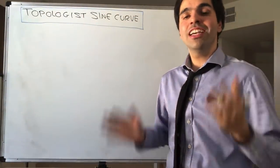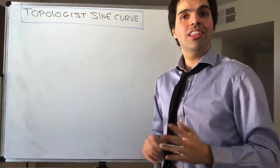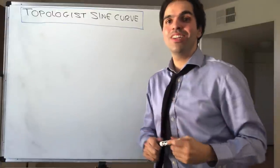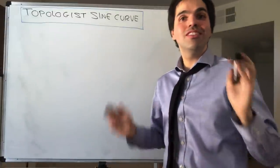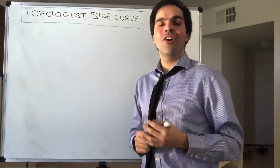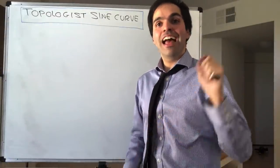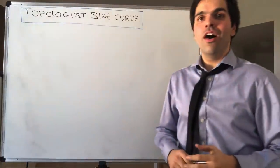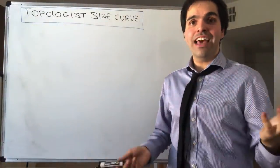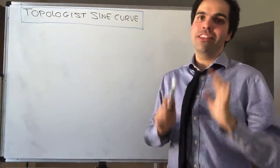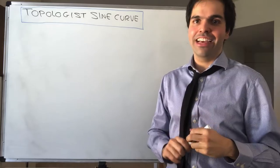Thanks for watching. Today I want to talk about the topologist's sine curve, which is a very important mathematical object, and the prime example of a set that is connected but not path connected.